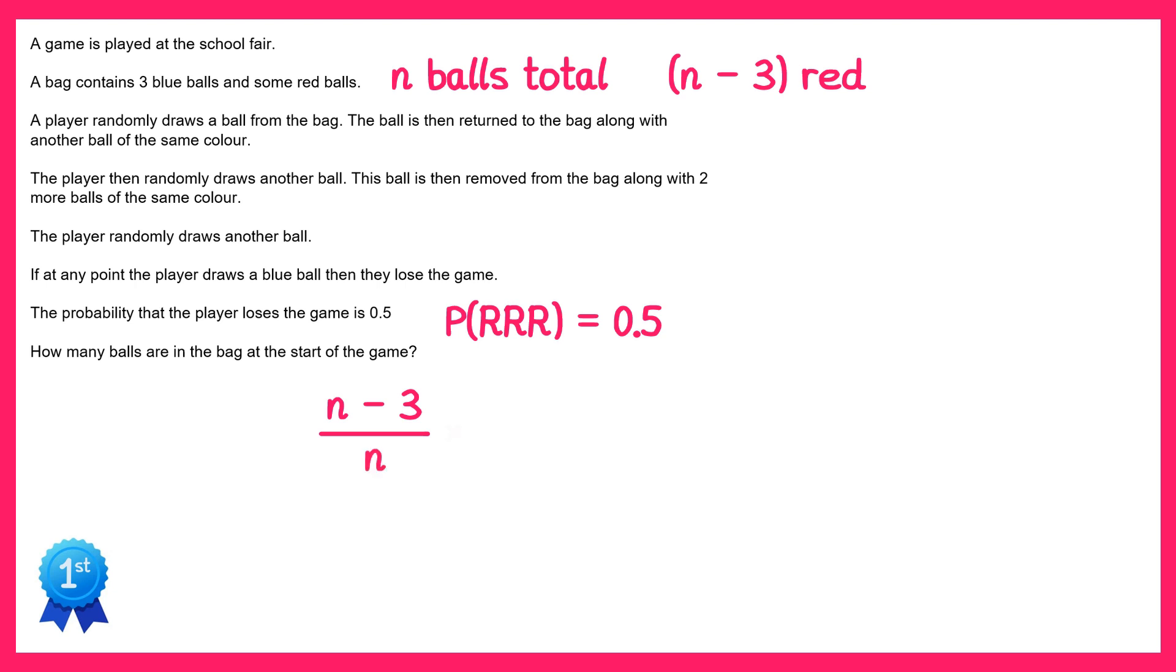Now we need to multiply this by the probability of getting a red on the second pick. When the player draws out the first ball, the ball is then returned to the bag along with another one of the same colour. So we got red on the first pick so we're going to add that back to the bag, but also another red to go with it. So now the total amount of balls in the bag is one greater than it was before, and there's also one more red than there was before. So the number of reds has increased from n minus three to n minus two, and the total number of balls in the bag has increased from n to n plus one.